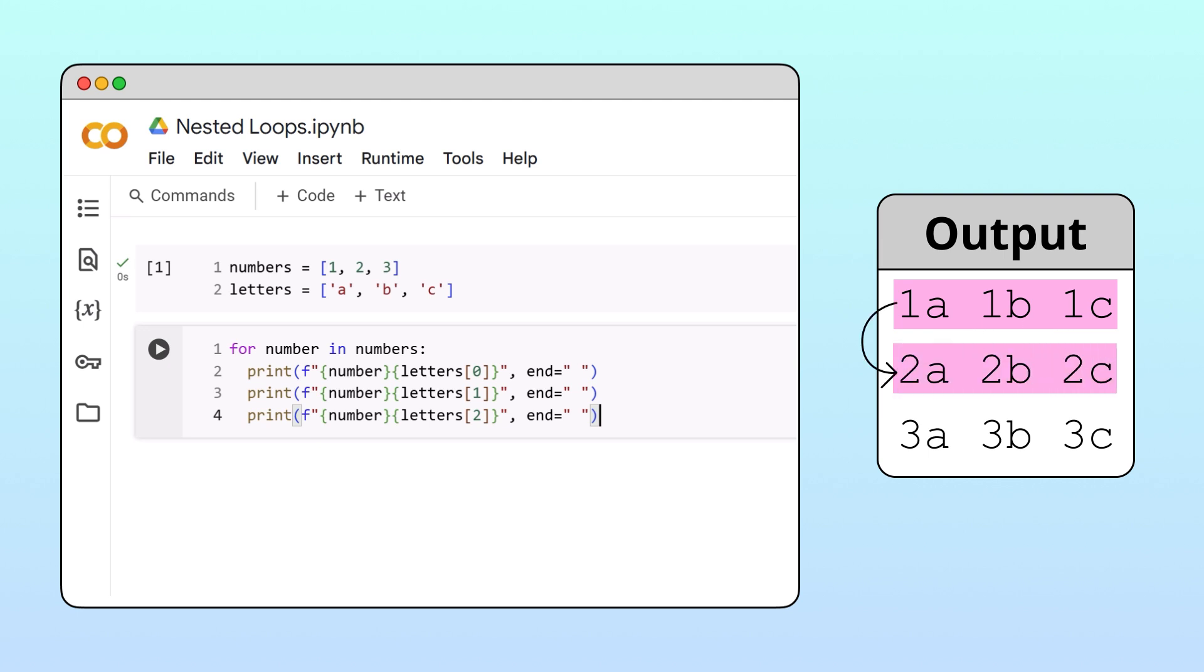To move to the next line after each row, we add a print statement at the end of the loop body. If we run the cell, we get the grid pattern that we wanted.